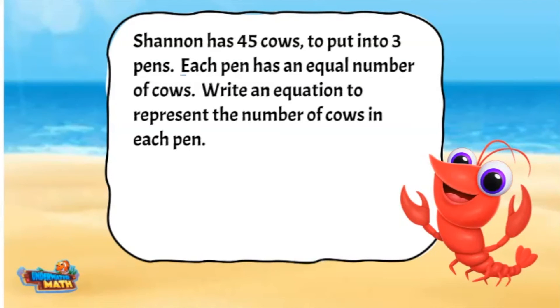The clue words helping us in this story are the word each and an equal number. Shannon is dividing the 45 cows equally between 3 pens. The equation will look like this: 45 divided by 3 equals P.